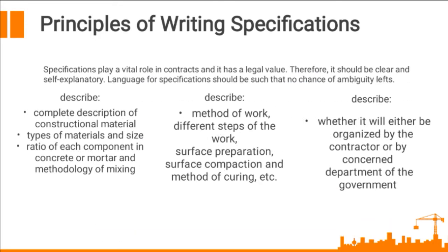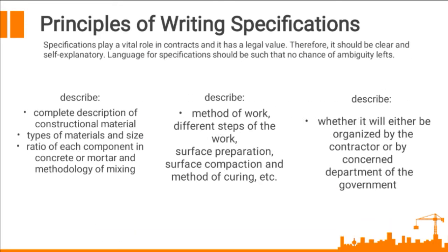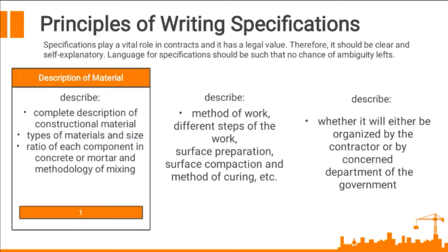Principles of Writing Specifications. Specifications play a vital role in contracts and have a legal value. Therefore, it should be clear and self-explanatory — language for specifications should be such that no chance of ambiguity remains. Specifications determine the quality of construction work. The following principles must be observed while writing a specification. The first principle is the description of the material: it describes a complete description of constructional material, types of materials and size, ratio of each component in concrete or mortar, and methodology of mixing. You will describe the materials used — for example, if a working drawing shows a plaster wall, the specifications should include the description of a plaster mix, glass, paper backing, and finishing techniques.